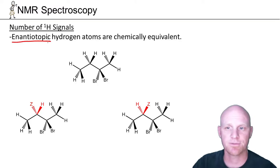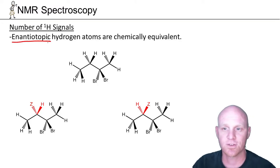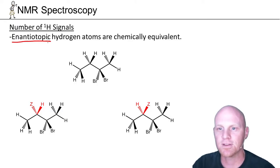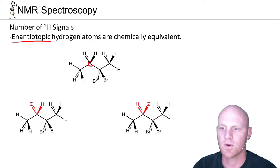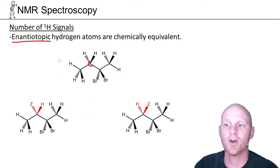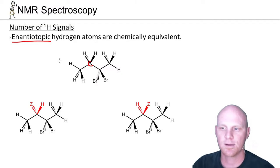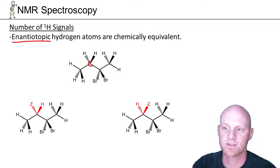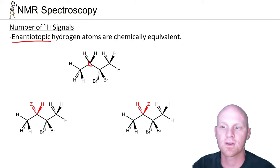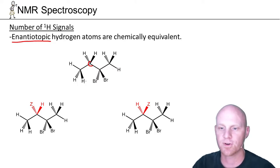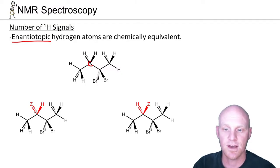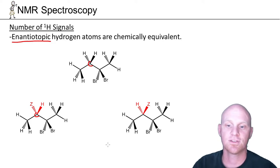You might be familiar with the word enantiomers if you've already covered that chapter. Some courses teach this before stereoisomers, so I'll be as thorough as I can. If we look at this particular CH2, the two H's bonded to that carbon — you might note there are no chiral centers, no atoms bonded to four different groups. But if you replace one of those H's with the letter Z, it does make that carbon a chiral center.